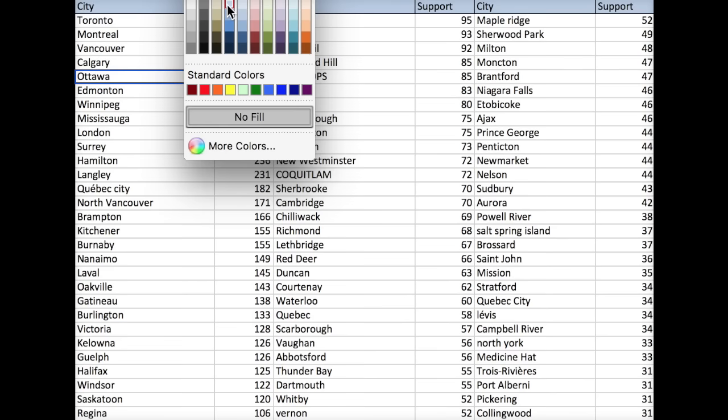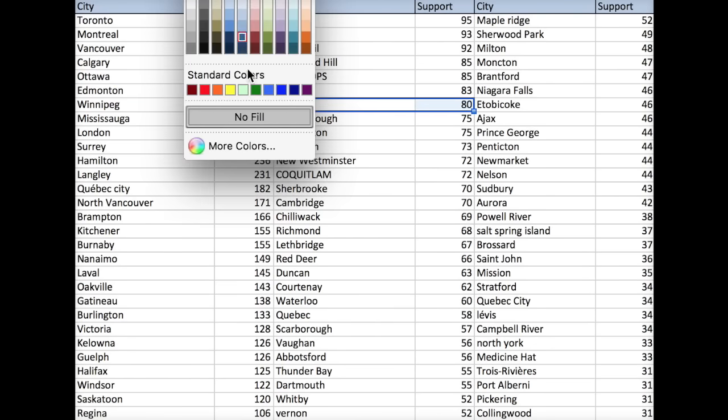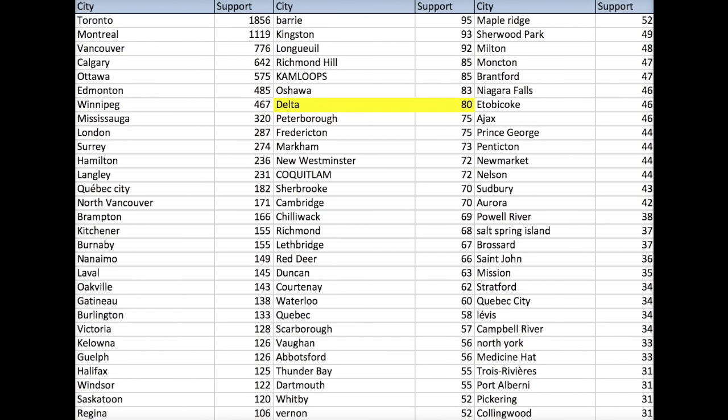But if you talk about Toronto or Montreal, there are more than 1,000 people there. I mean, if I take the towns surrounding Delta, like Langley and Surrey and others, it easily goes to more than 500 supporters.